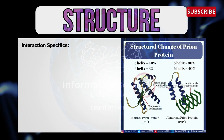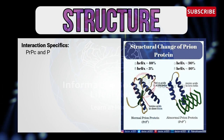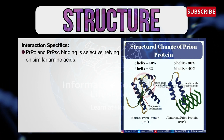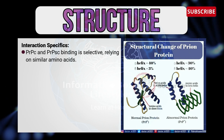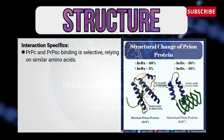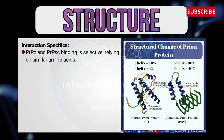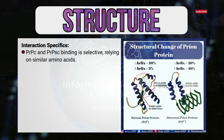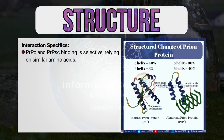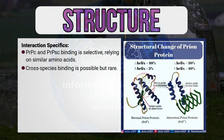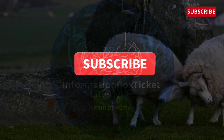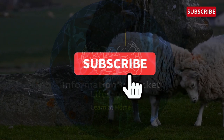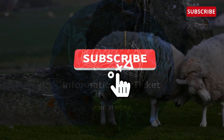Regarding interaction specifics, cellular prion protein and scrapie prion protein binding is selective, relying on similar amino acids. Cross-species binding is possible but rare. If this video is helpful, don't forget to subscribe.